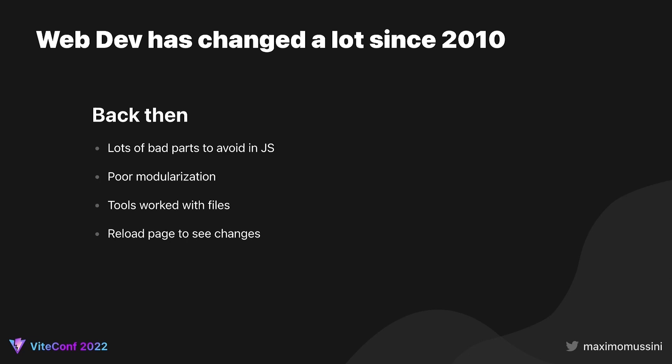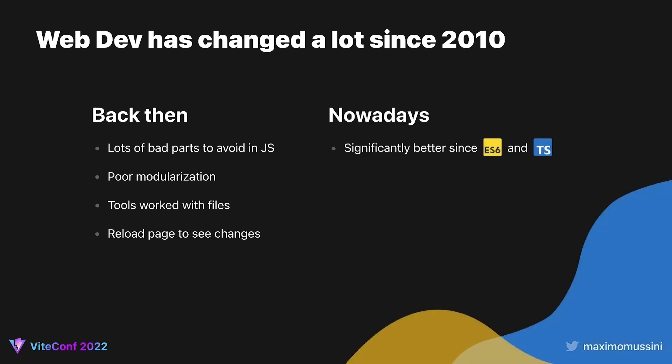In terms of development feedback, there was only one option: reload the page to see any changes that you had made. Nowadays, JavaScript has improved a lot, with a more complete standard library and useful syntax sugar like lambdas and safe navigation. Tools like ESLint and TypeScript make it a lot easier to catch mistakes ahead of time. The introduction of a native module system has made it a lot easier to organize code and ensure it always loads correctly.